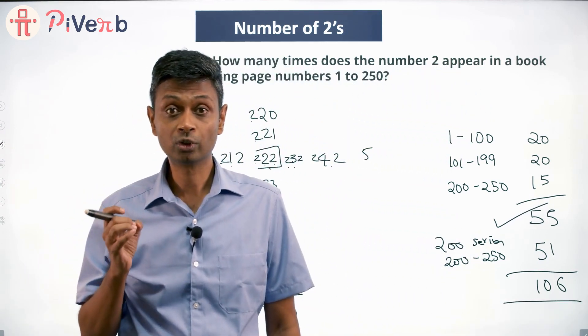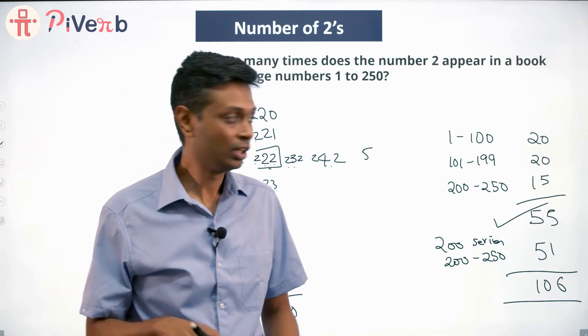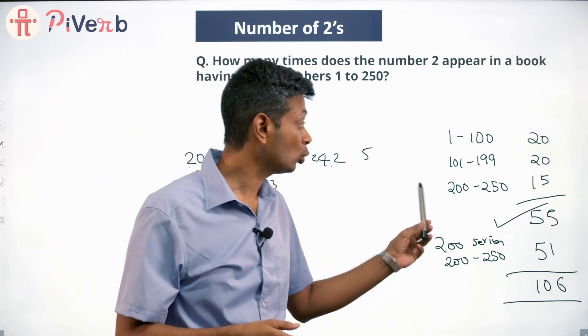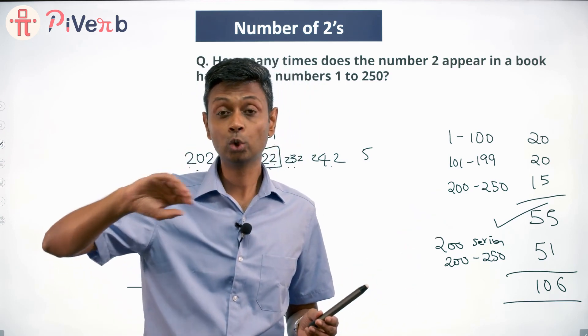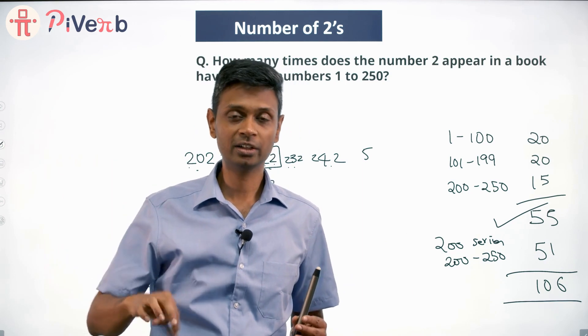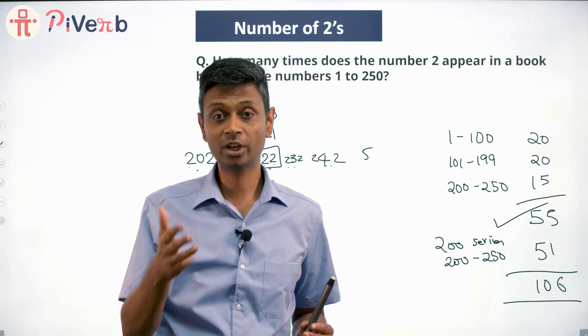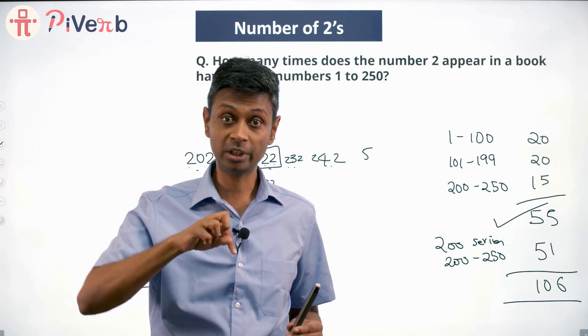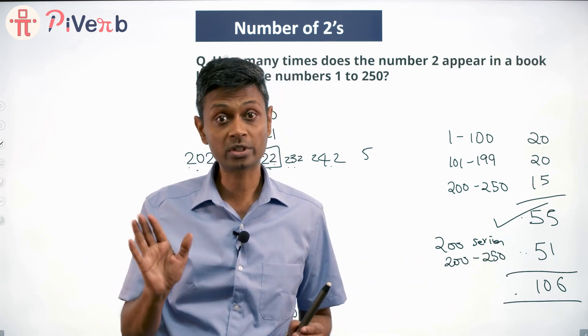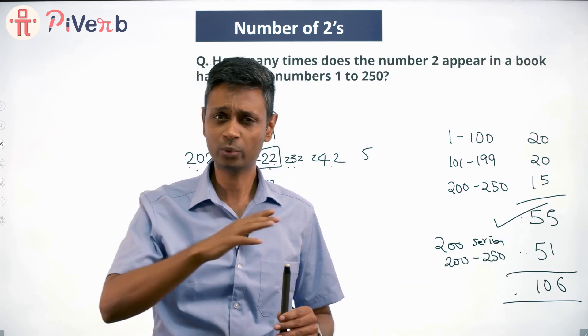Beautiful question. We'll be very careful. We are counting from 1 to 100, then 101 to 199, and then 200 to 250. Don't forget 52, 62, 72, 82, 92. Do not forget 200, 201, 202, 203 - all the 2s in the hundredth place. 51 numbers. 55 plus 51, 106. Beautiful question, very doable question. You should be getting these questions right.